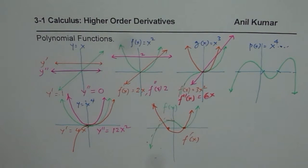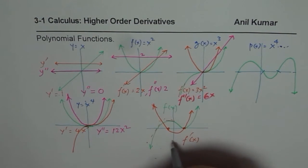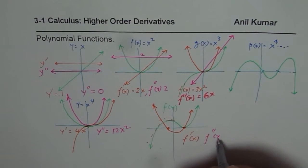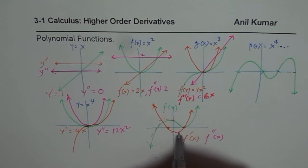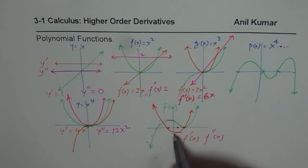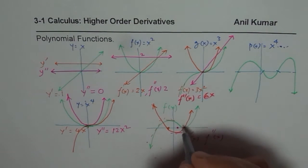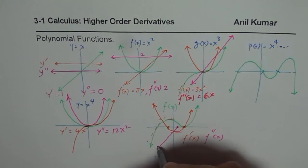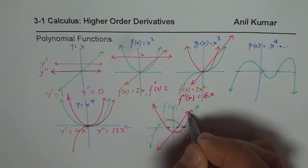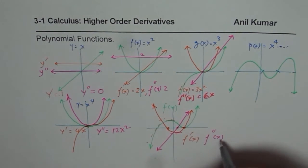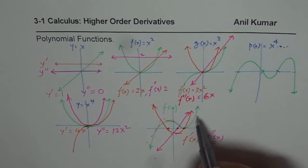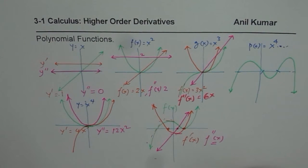For the second derivative f-double-dash of x, which is the derivative of the derivative: we get a zero at the vertex of the parabola. This part is negative and that part is positive, so a straight line — negative in one portion and positive in the other — gives us the second derivative. Each step goes one degree lower.